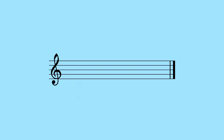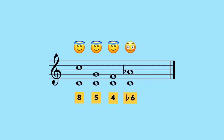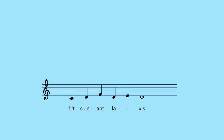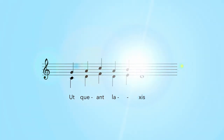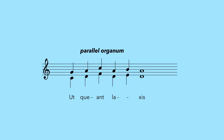At the time, only octaves, fifths, and fourths were considered consonant intervals — notes that sound nice together. So the next logical step was adding a second voice that followed the leading voice in perfect parallel, transposed mostly by a perfect fourth or fifth. The so-called parallel organum, used in Gregorian chants. Here's an example of a combination of both techniques from the 9th century.